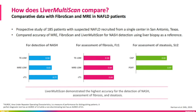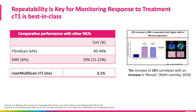A recently published comparison between FibroScan, MRE elastography, and Liver Multi-Scan for the assessment of NASH using liver biopsy as a reference showed that Liver Multi-Scan outperformed both FibroScan and MRE elastography for detection of NASH, the assessment of liver fibrosis equal or greater than stage 1, as well as for the assessment of fat within the liver. These findings are quite interesting when comparing the coefficient of variation between FibroScan, MRE elastography, and Liver Multi-Scan.